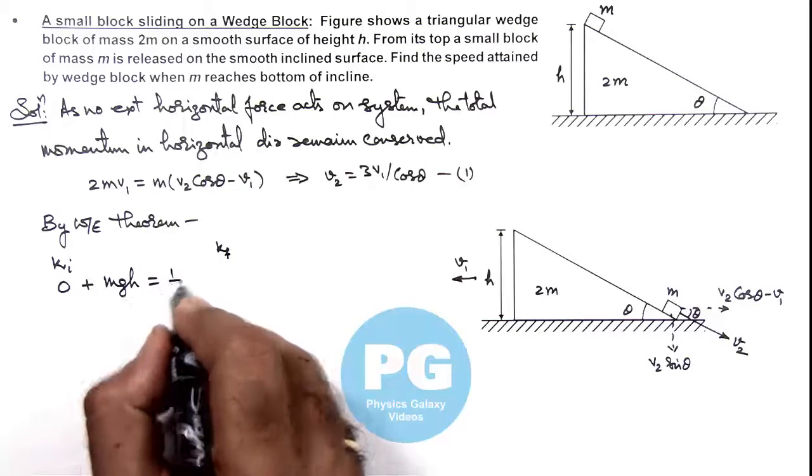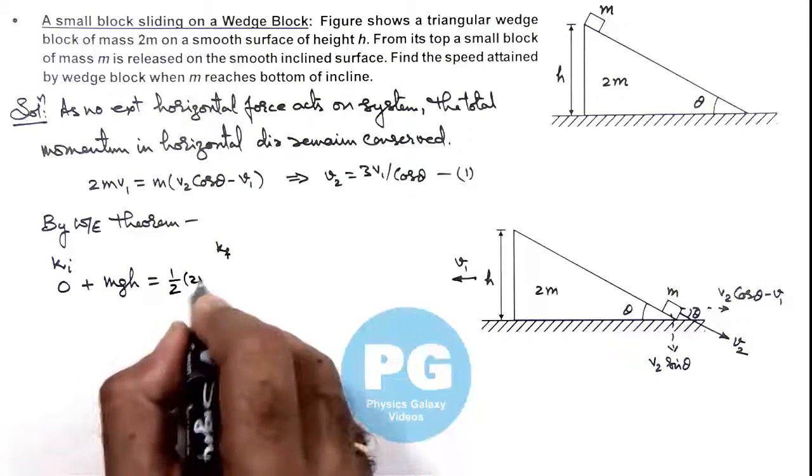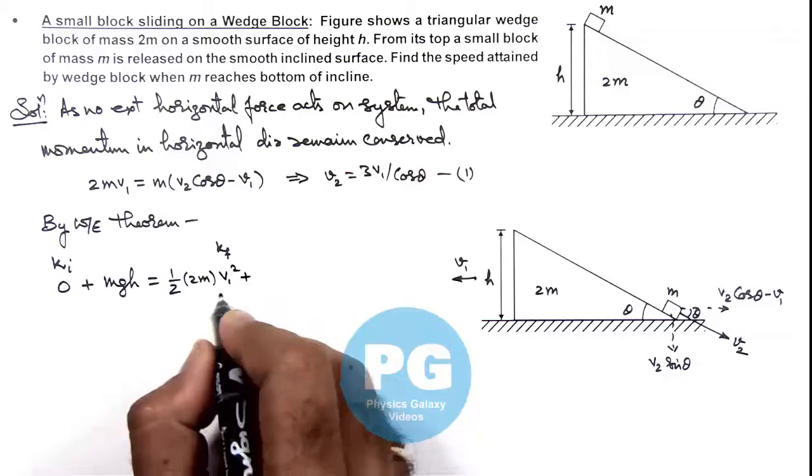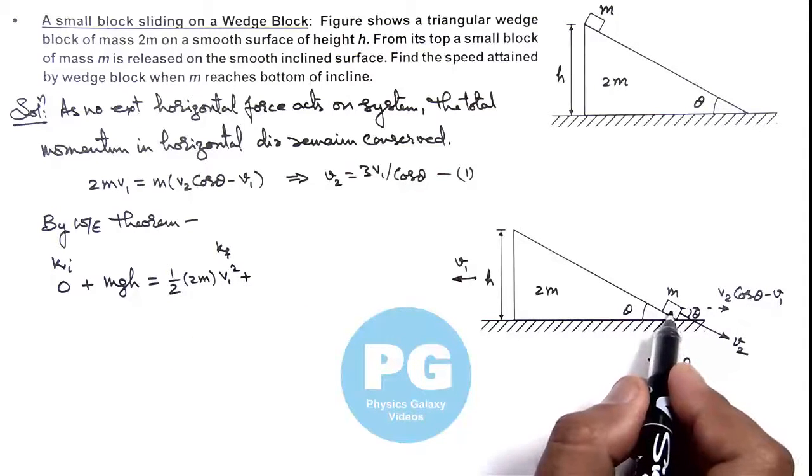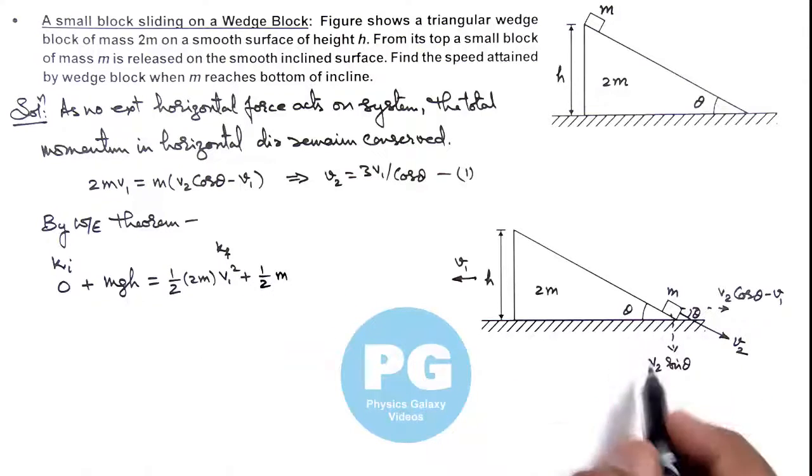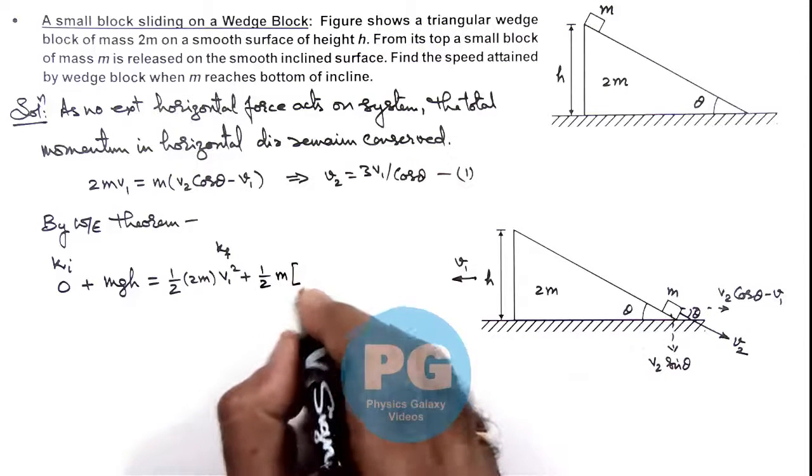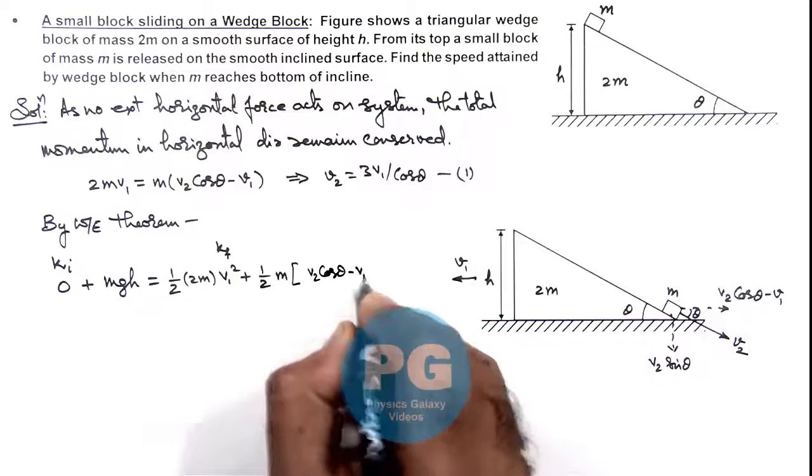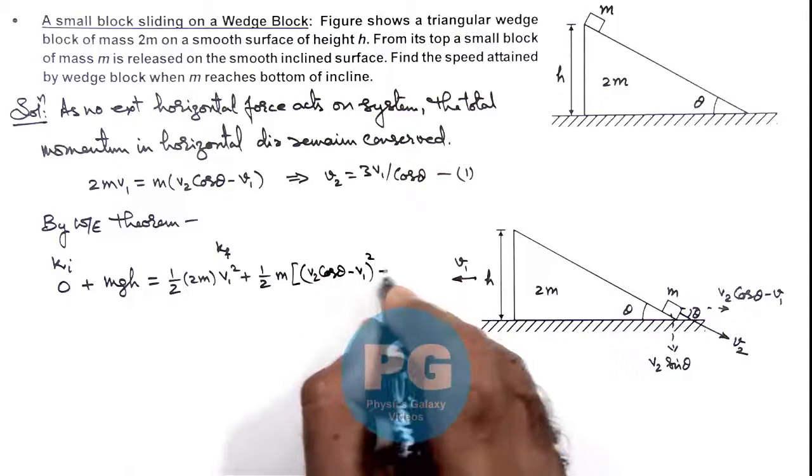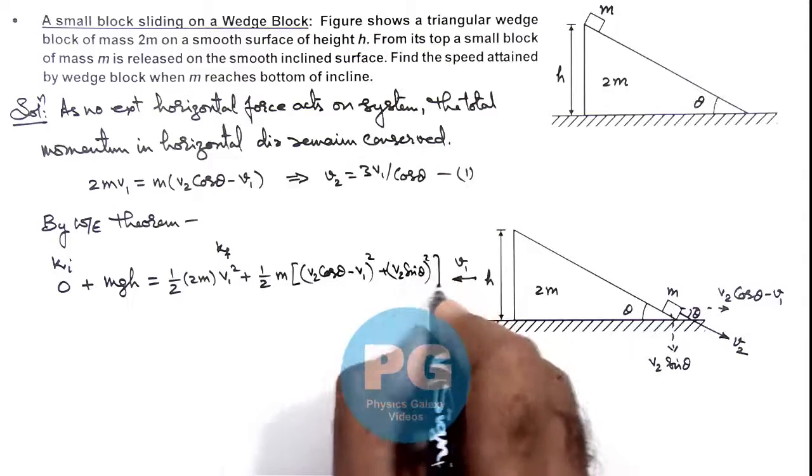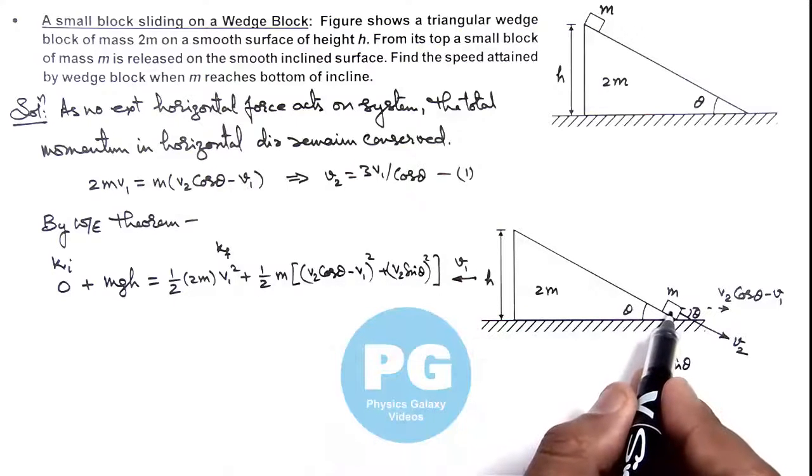On this wedge block kinetic energy is half multiplied by 2m into v1 square, plus the kinetic energy gained by this block of mass m is half m. This will be vx square plus vy square, so we'll write it like v2 cos theta minus v1 whole square plus v2 sin theta whole square. So this is the total kinetic energy of this small block.